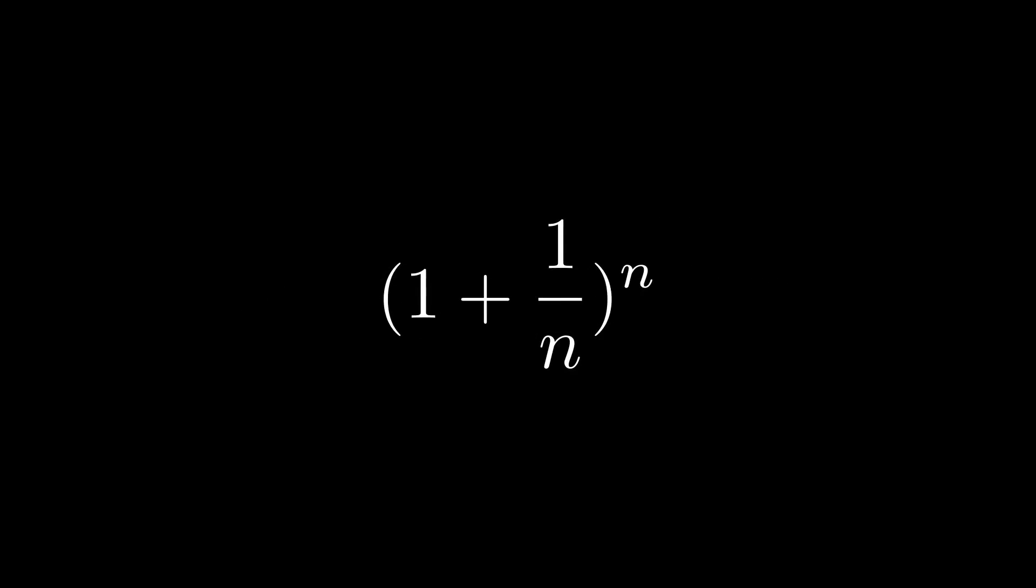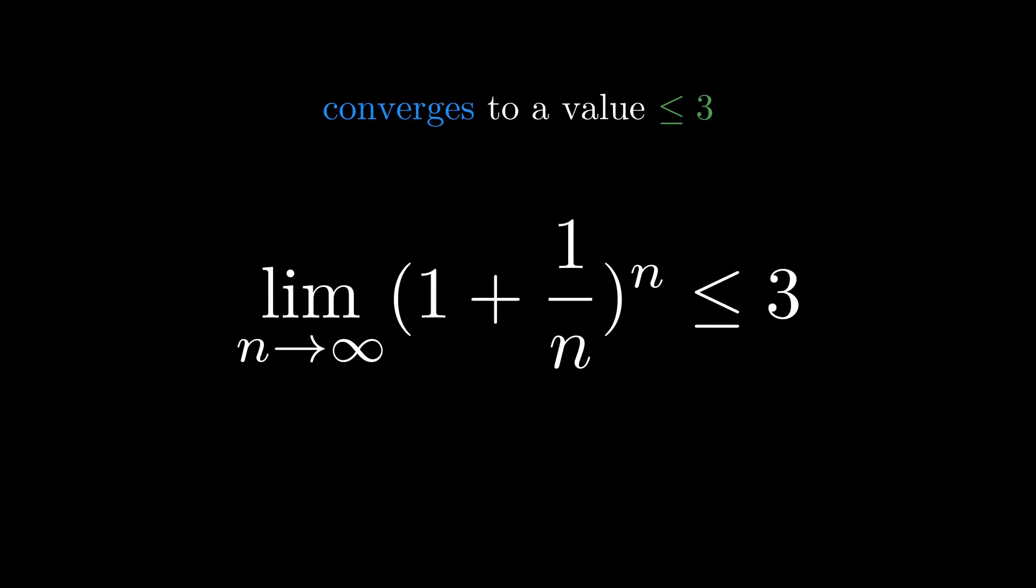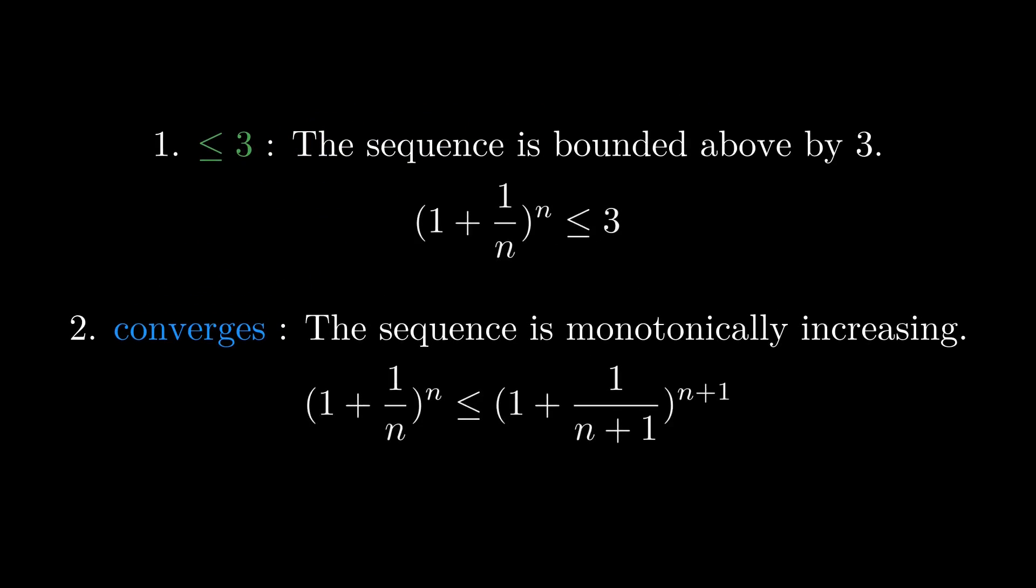By looking at the terms of this sequence, we can conclude that the sequence converges to a value less than or equal to 3. To prove this claim, we will show that: 1. The sequence terms are bounded above by 3. And 2. That the sequence is monotonically increasing.